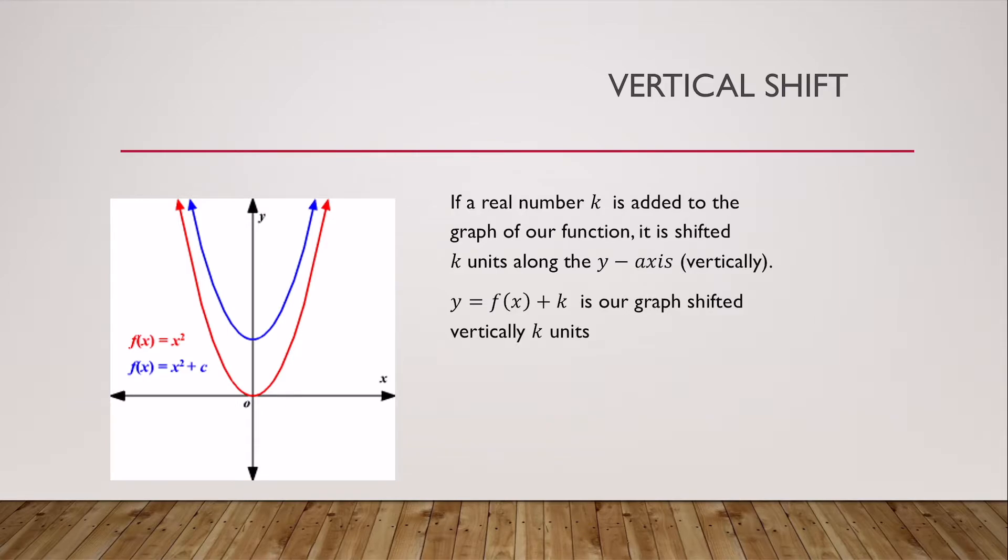This works for all functions. So if I'm given a real number k, and I add that to the equation of our function, it is shifted k units along the y-axis, so k units vertically. Our new function would be f of x plus k. For example, I have a quadratic. If we add some constant in a positive direction, it's going to be shifted up.